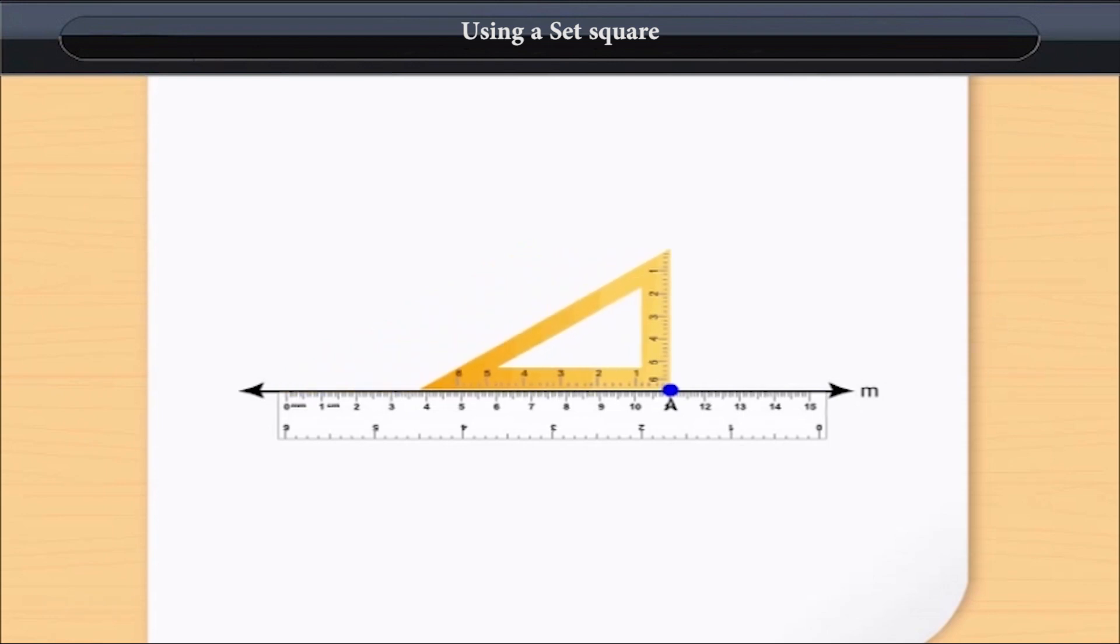Hold the set square firmly in this position. Draw a line AB along the edge of the set square as shown. This line AB is perpendicular to line M.